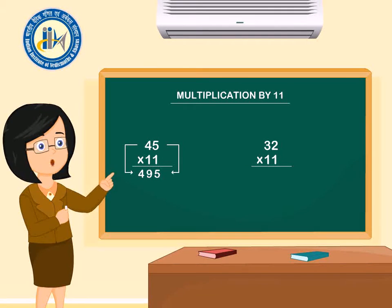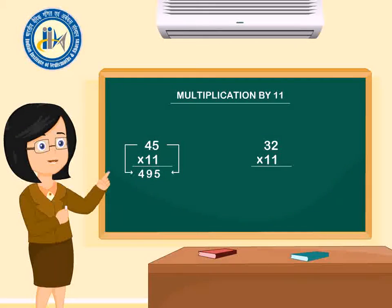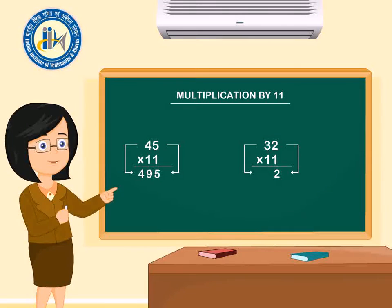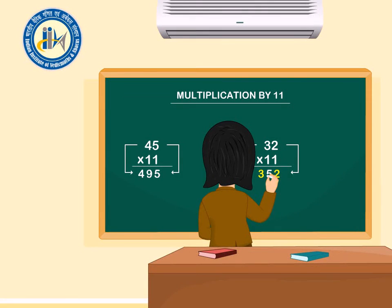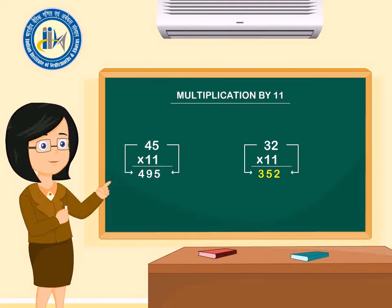Second sum. Now this sum we will do directly. 2 at the 1's place, 3 at the 100th place. Now add them, 3 and 2 is 5, and we will place 5 in between 3 and 2. So our answer is 352.